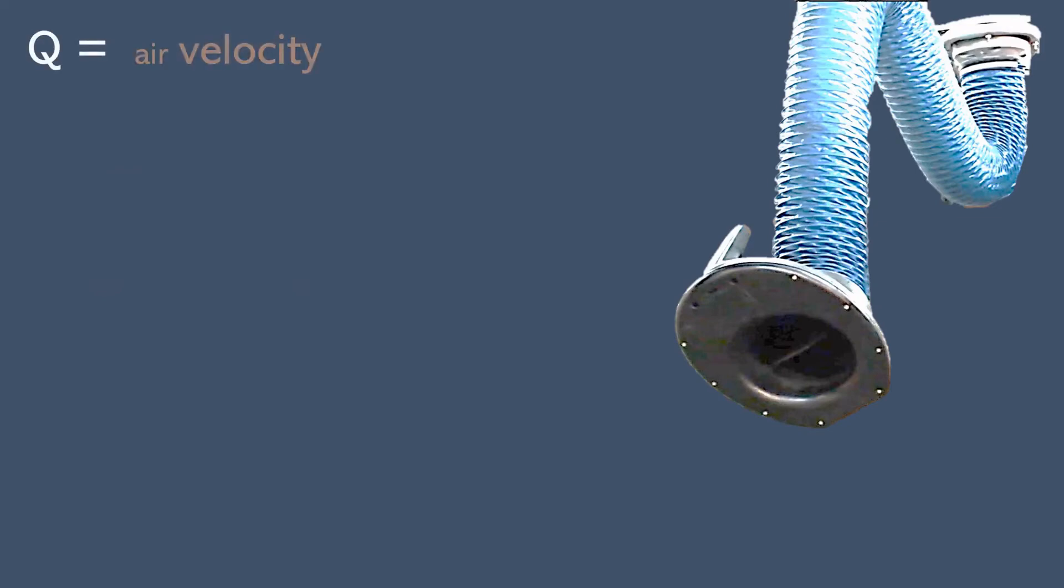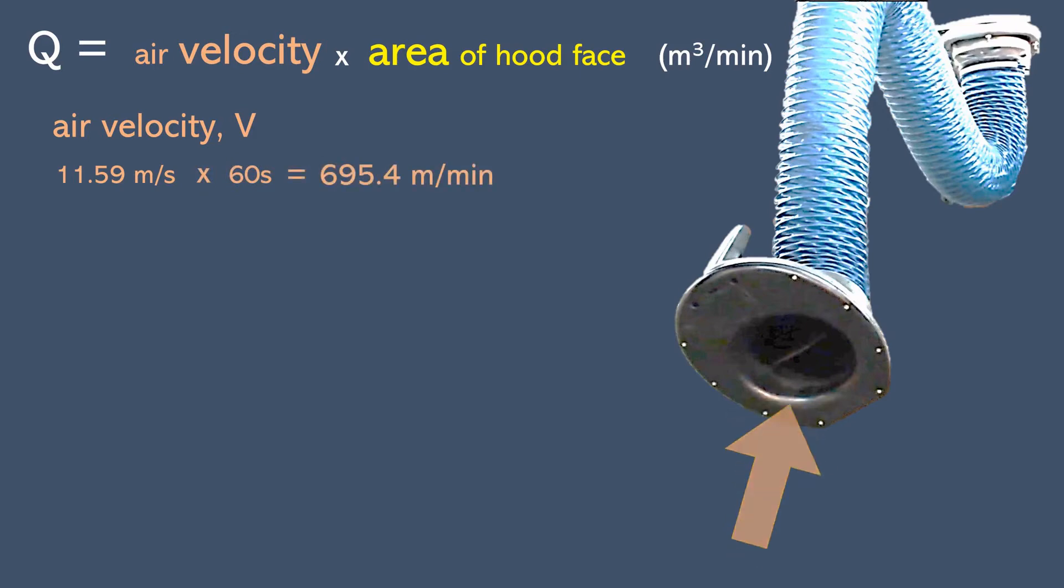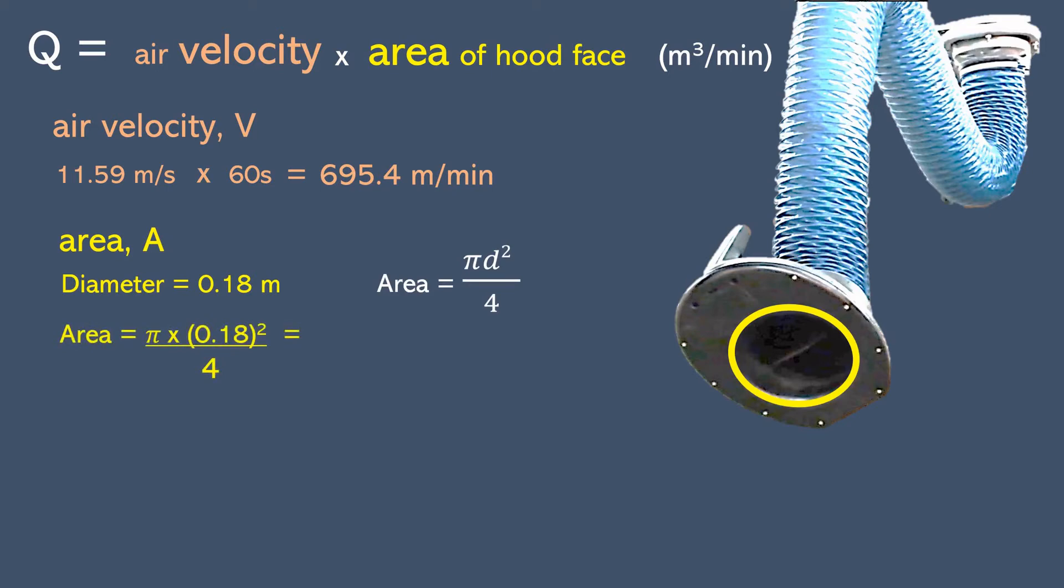Remember that we got this equation, where to get the airflow, we must have the air velocity multiplied with the hood's face area. The measurement of our air velocity by the anemometer is 11.59 meter per second. We multiply it with 60 seconds to convert it to meter per minute, and we got 695.4 meter per minute. Then for the hood's face area, when I measured the hood's face, I got diameter of 0.18 meter. Using the equation of area equal to pi d square over 4, we got the area equivalent to 0.025 meter square. So with all the values of the air velocity and the area that we had calculated, finally we got our airflow of the air that pulled into the LEV equivalent to 17.4 cubic meter per minute.